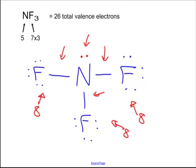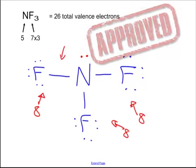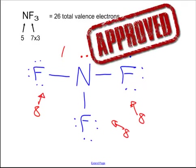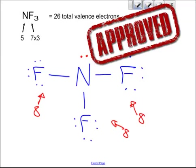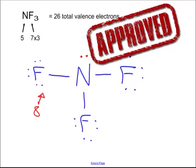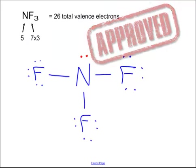Now we count how many the central atom has. Nitrogen has two, two, two, and two — that is eight. Nitrogen has an octet, and we're done. This is the Lewis dot structure of nitrogen trifluoride.